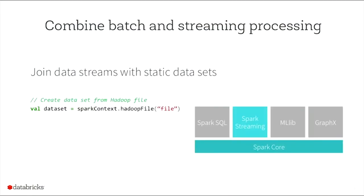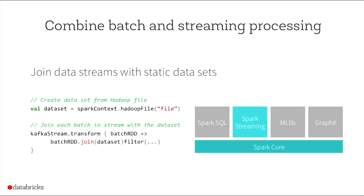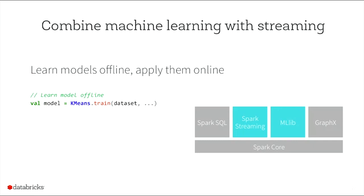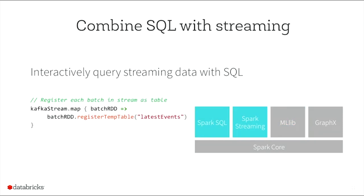The big thing is that it integrates with the Spark ecosystem. You can join data streams with static datasets — create an RDD dataset in Spark and join it with any arbitrary stream. You can combine machine learning and stream processing together with streaming machine learning algorithms. You can take any model learned using MLlib and apply it on a data stream for predictions. You can combine SQL with streaming by interactively querying streaming data using Spark SQL, registering a Kafka stream as a temp table. And now that DataFrames are in Spark 1.3, you can use DataFrames too. This makes Spark Streaming more powerful than any other stream processing system.